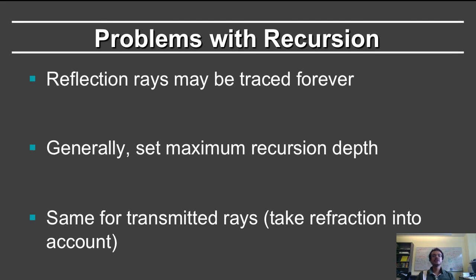Recursion is a great tool in computer science. It enables one to easily express concepts that would be very difficult otherwise. But with all recursive algorithms, we must have some guarantee that the algorithm will stop. Reflection rays may be traced forever, however, consider especially if you have something that looks like a hall of mirrors.